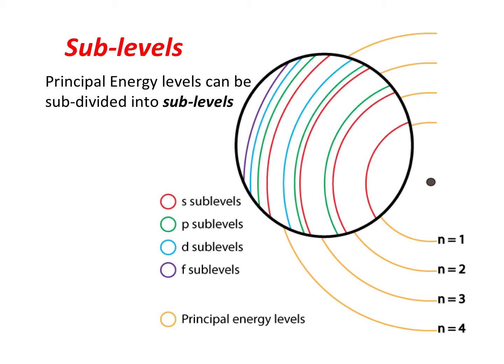The first principal energy level has only one sublevel, and it is an S sublevel. The second principal energy level is split into two sublevels — an S and a P. The third principal energy level is subdivided into three sublevels: an S, P, and D. And the fourth principal energy level is subdivided into four sublevels: an S, P, D, and F.